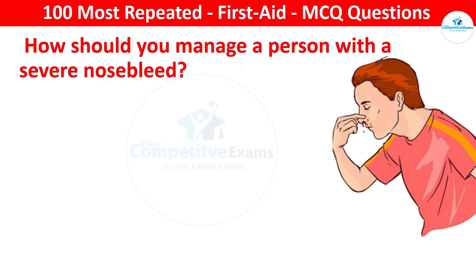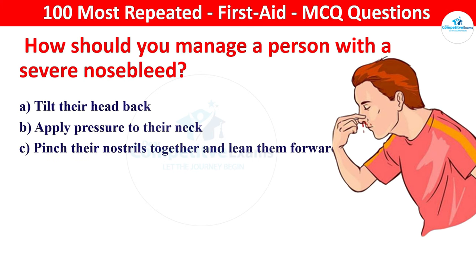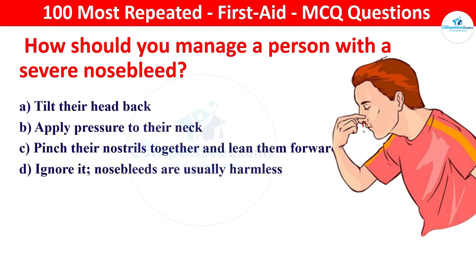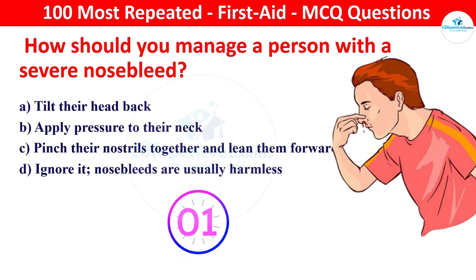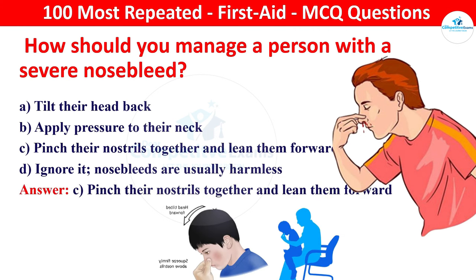Next question: how should you manage a person with a severe nosebleed? Options: tilt their head back, apply pressure to their neck, or pinch their nostrils together and lean them forward. The right answer is pinch the nostrils and lean forward. This helps to control bleeding and prevents blood from flowing down the throat.